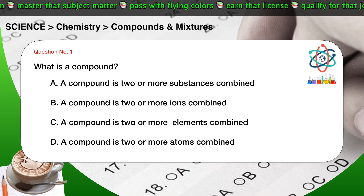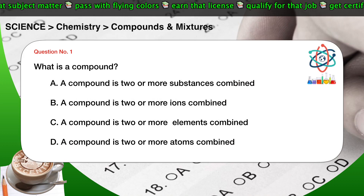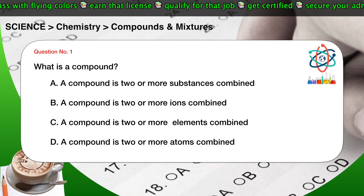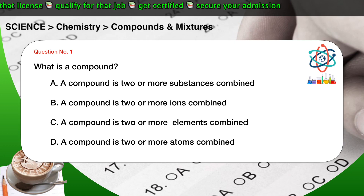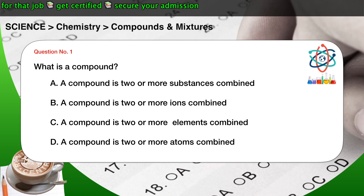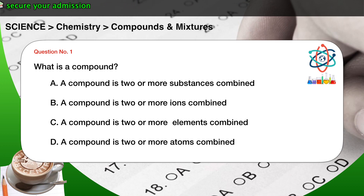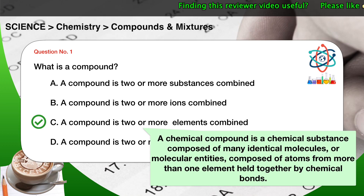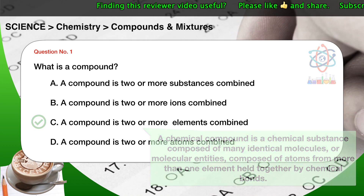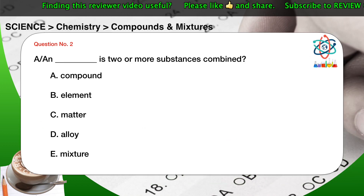Question number one: what is a compound? A) A compound is two or more substances combined. B) A compound is two or more ions combined. C) A compound is two or more elements combined. D) A compound is two or more atoms combined. The correct answer is C. A chemical compound is a chemical substance composed of many identical molecules or molecular entities composed of atoms from more than one element held together by chemical bonds.